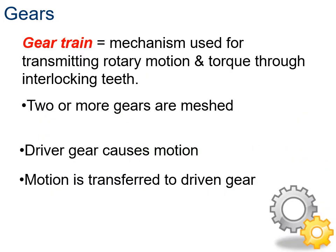A gear train is a mechanism for transmitting rotary motion and torque through teeth - teeth mesh together. When you're riding a bike, people talk about gears, but technically those aren't gears because the teeth are not interlocking - it works with a chain. Gears are specifically where teeth are meshing directly with each other.